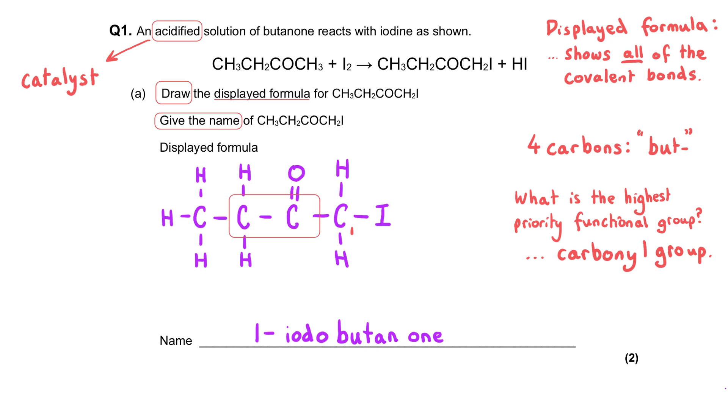But because butanone typically could have that carbonyl group on either of the two carbon atoms it would normally be symmetrical. But since we've got the iodine on one end we actually need to give a position indicator for the ketone functional group. So if the iodine is on carbon number one that means the ketone is on carbon number two, and so this would be in full 1-iodo-butan-2-one.